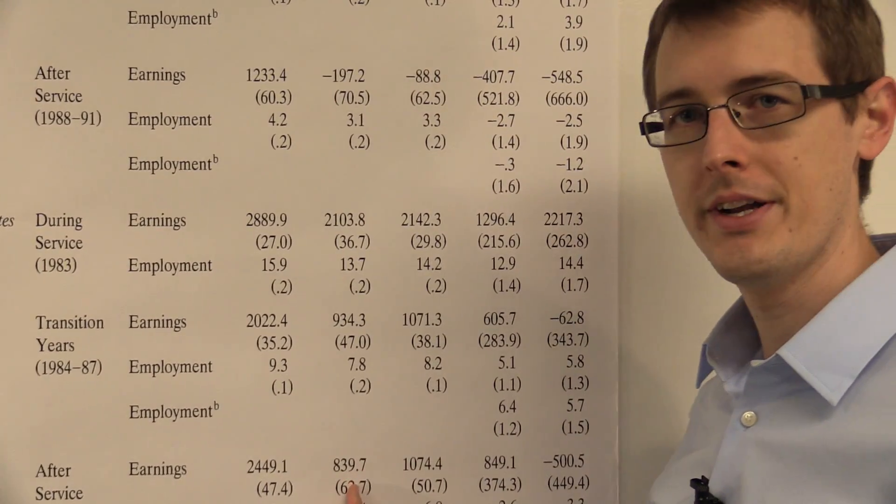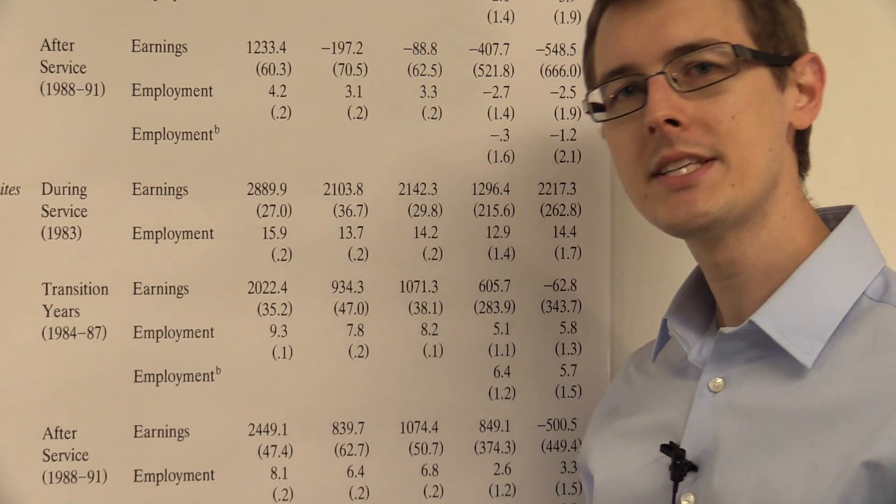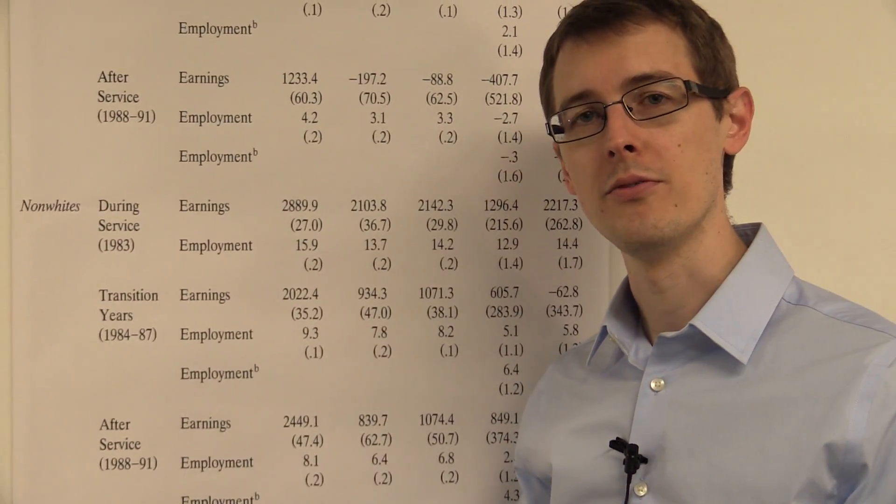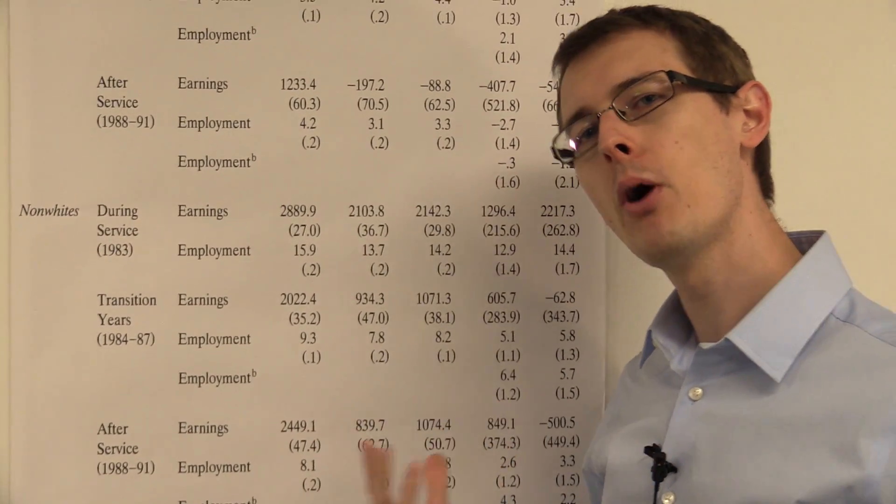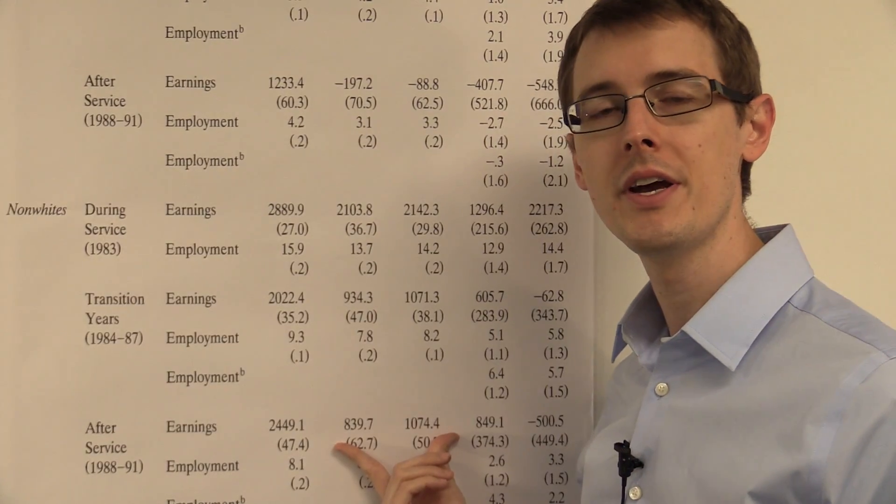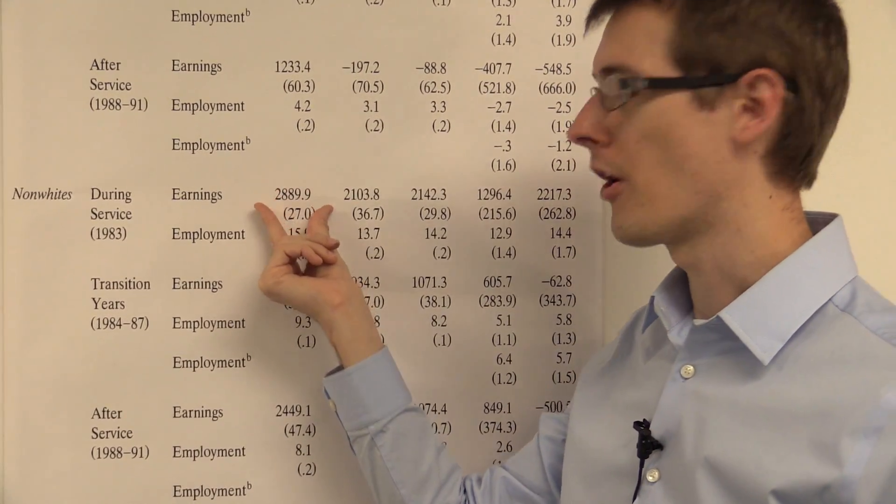Now the reason these two columns are different is that they're both controlling for variables in certain ways, but they're estimating slightly different average causal effects. So we're getting a little bit different numbers, but they both have the same interpretation. These are the causal effects under the unconfoundedness assumption, whereas these numbers are not causal.